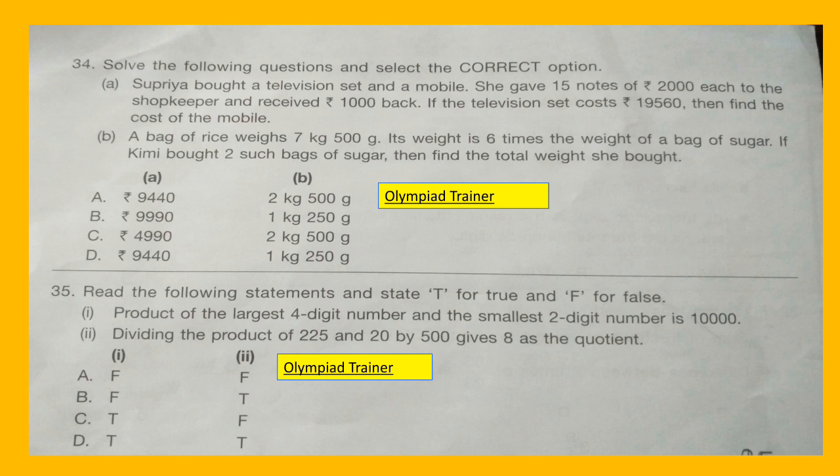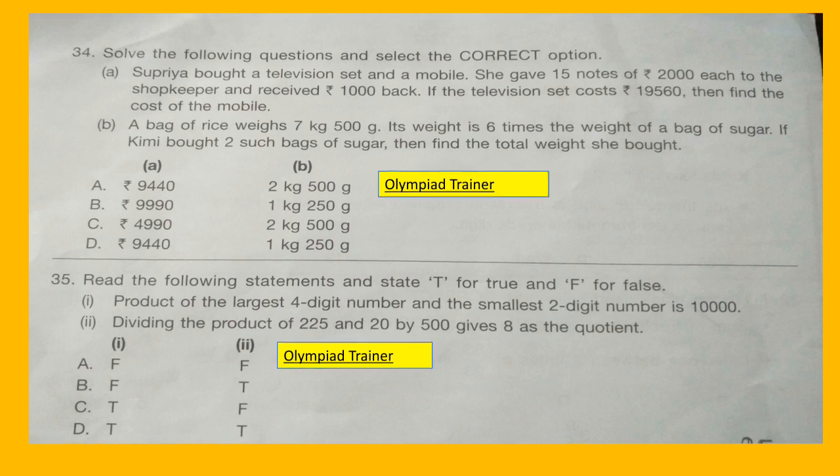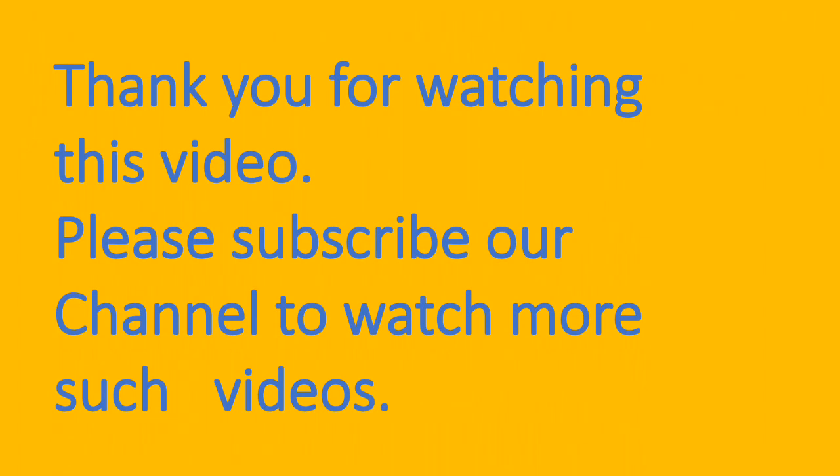Question 35: Read the following statements and state T for true and F for false. Statement 1: The product of the largest 4-digit number and the smallest 2-digit number is 10,000. Statement 2: Dividing the product of 225 and 20 by 500 gives 8 as the quotient. Thank you.